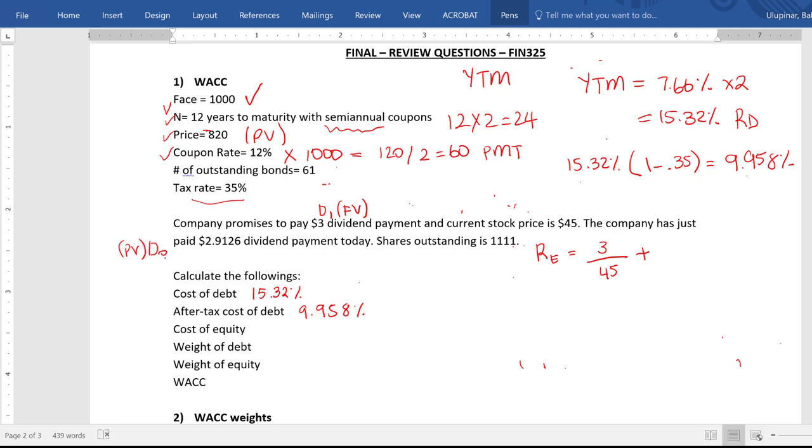So if dividend payment one is three, I'm going to enter my future value. And I'm going to enter this as my present value. Between this period zero and one, we have only one period. So my N will be one. So if I solve for the interest rate, that will be my growth rate.